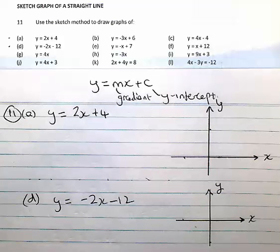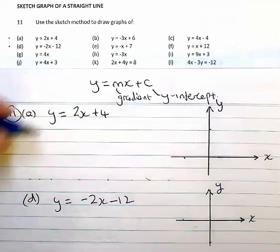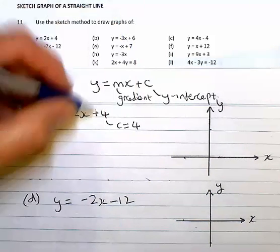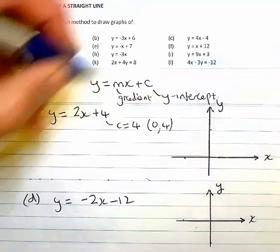Now the first point you've got to make use of is the y-intercept. Looking at the two I've got here, straight away I can see my y-intercept in the first instance is 4, or (0,4) as a point.